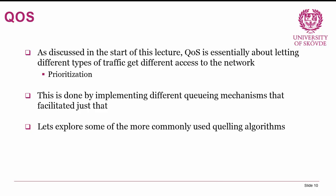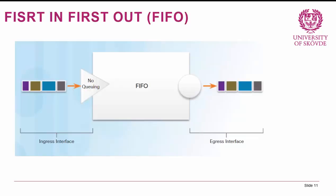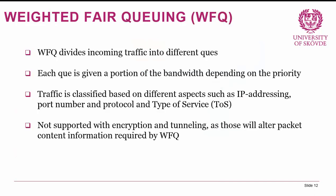The simplest queuing algorithm is First In, First Out — FIFO. FIFO is essentially no queuing algorithm at all: whatever data gets in first gets out first. This is what happens when no quality of service is configured.